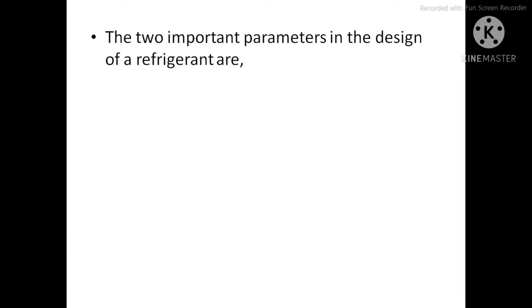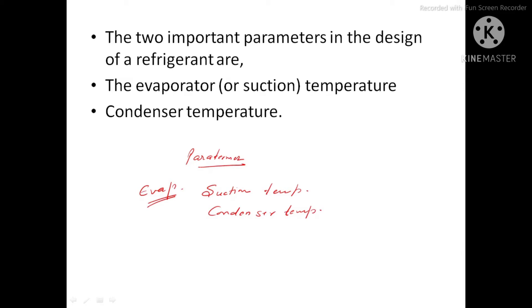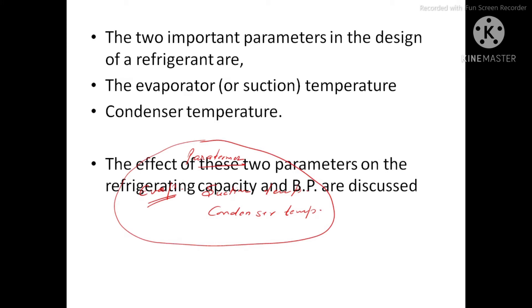Two important parameters in the design of the refrigerant system are evaporator temperature and condenser temperature. The performance of the compressor will be discussed with respect to suction temperature — which is also known as evaporator temperature — and condenser temperature. These two parameters and their effect on refrigeration capacity, total brake power, and brake power per ton will be discussed.